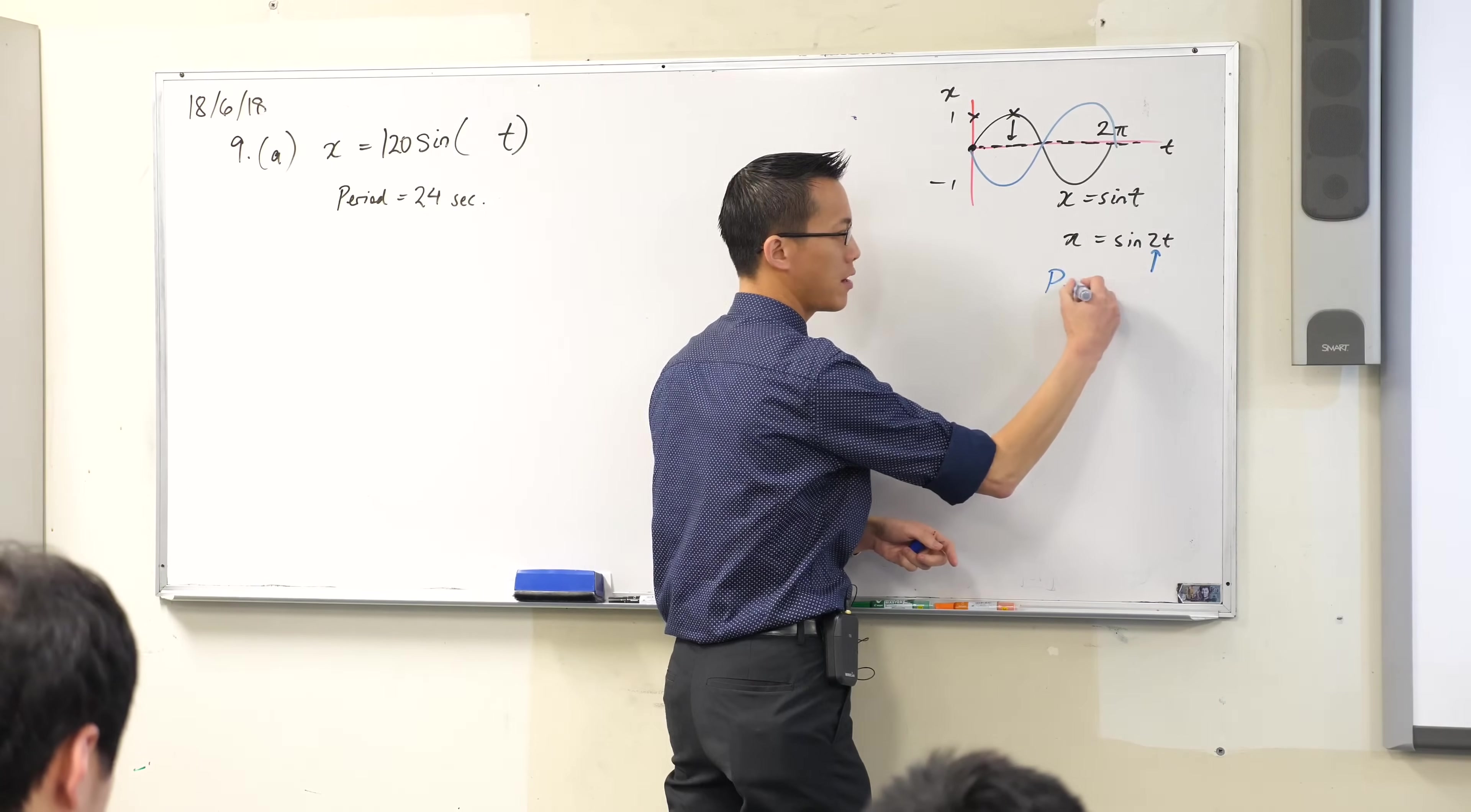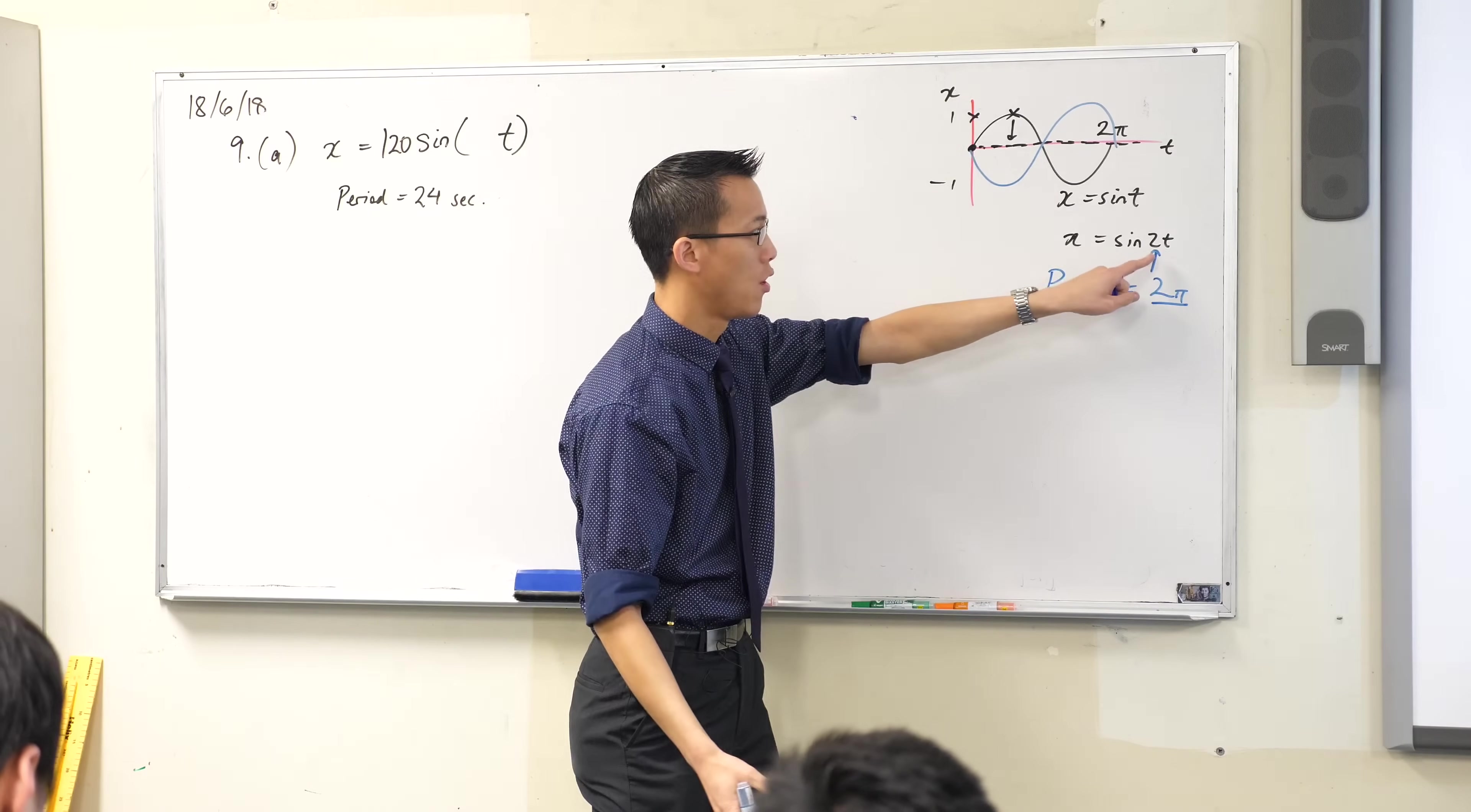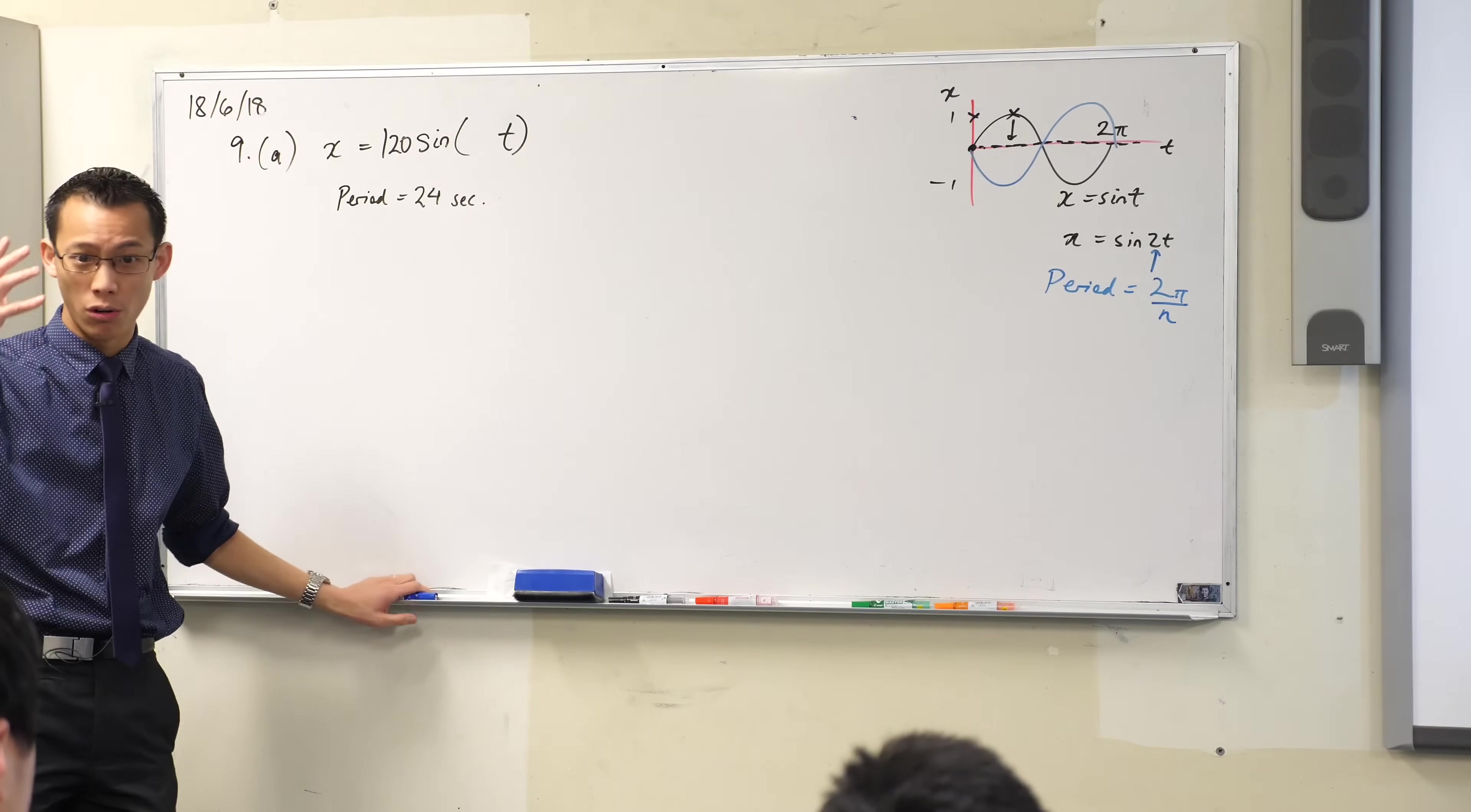So you might remember now, hopefully this is jogging your memory, that the period just generally speaking in these terms is going to be 2π divided by whatever it is that coefficient is, whether it's 1 or 2 or something else I'm about to find out over here.